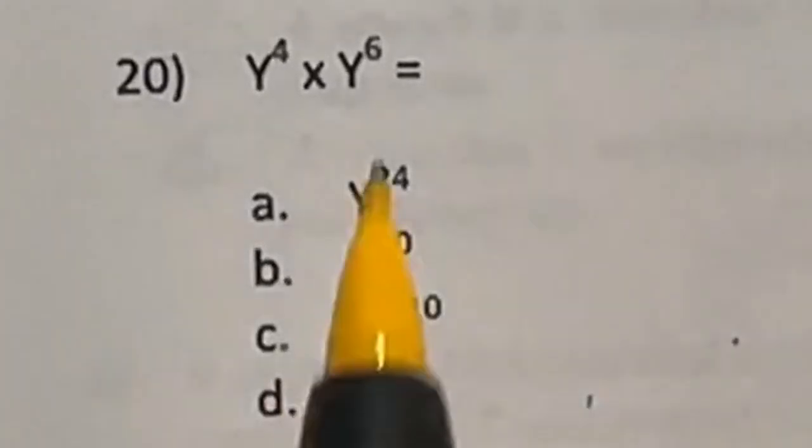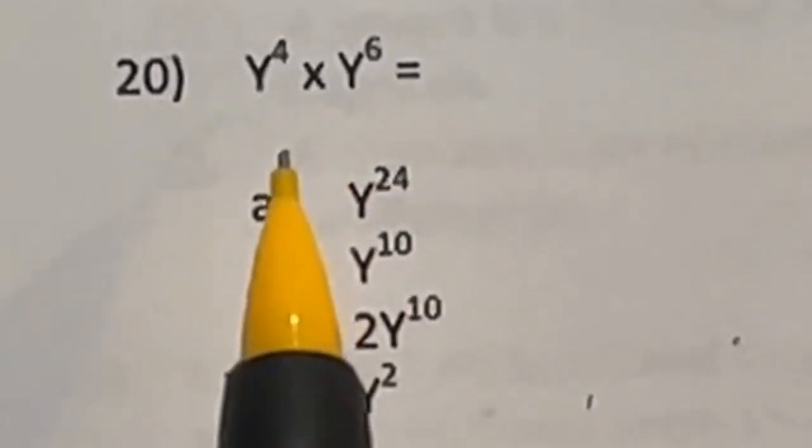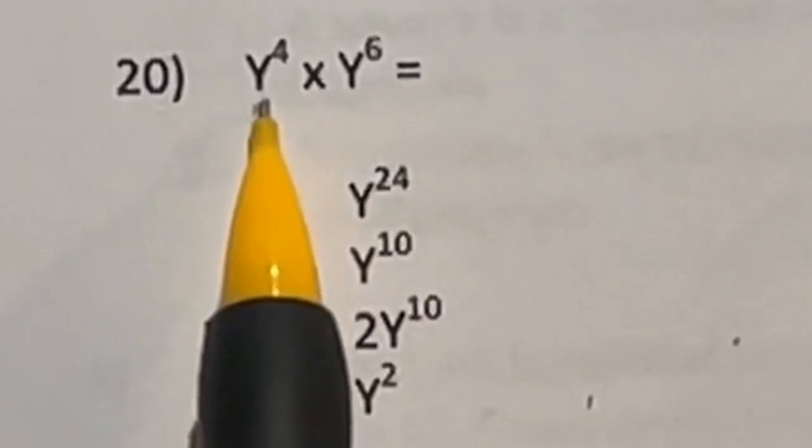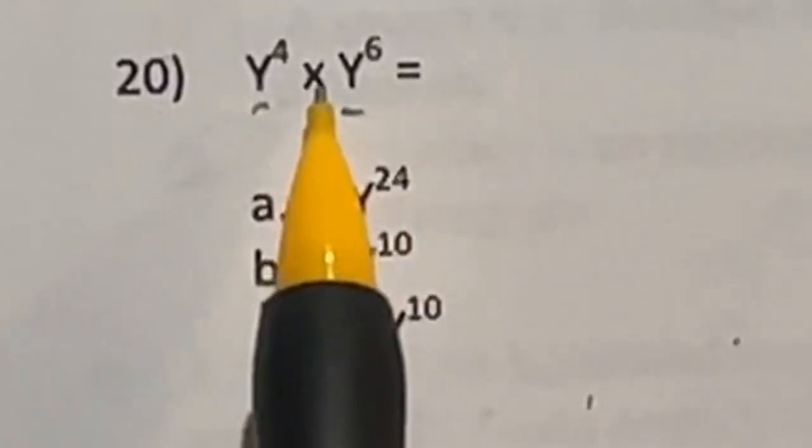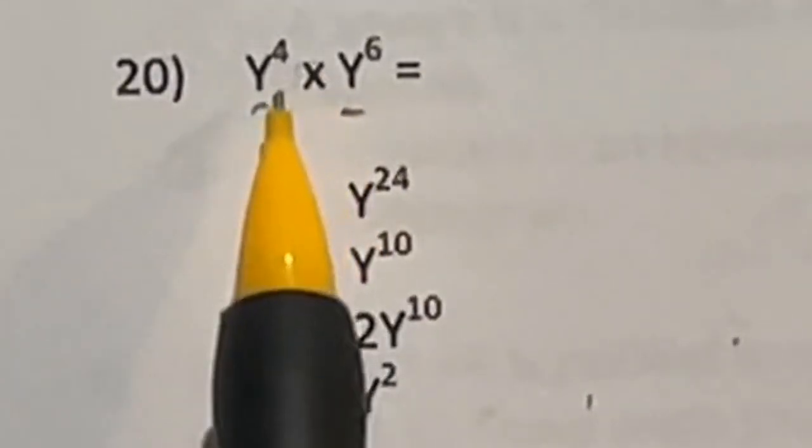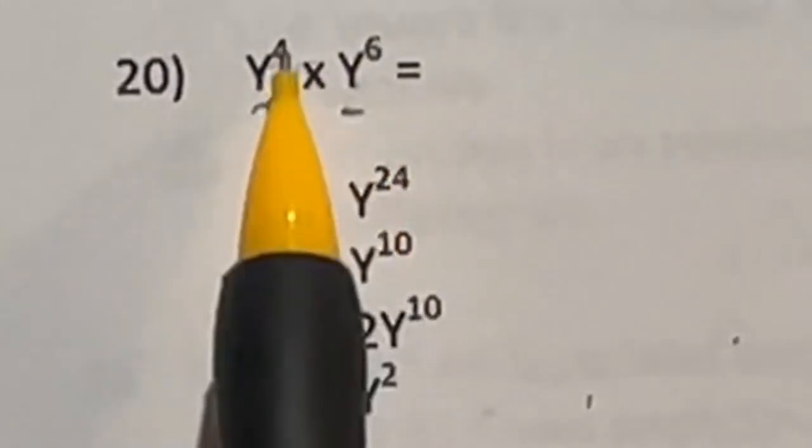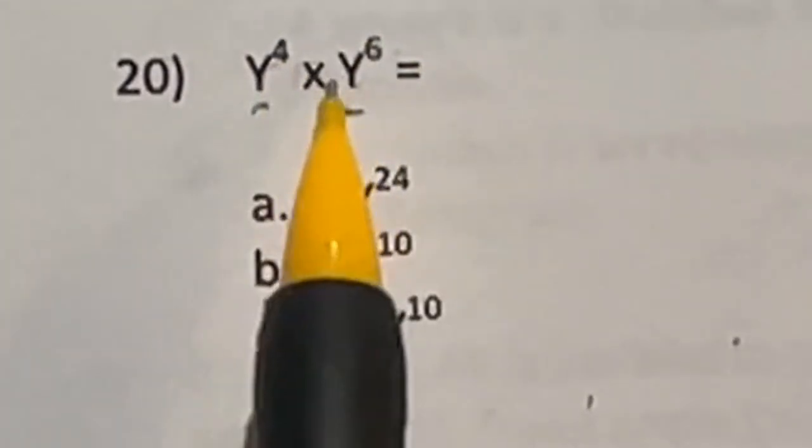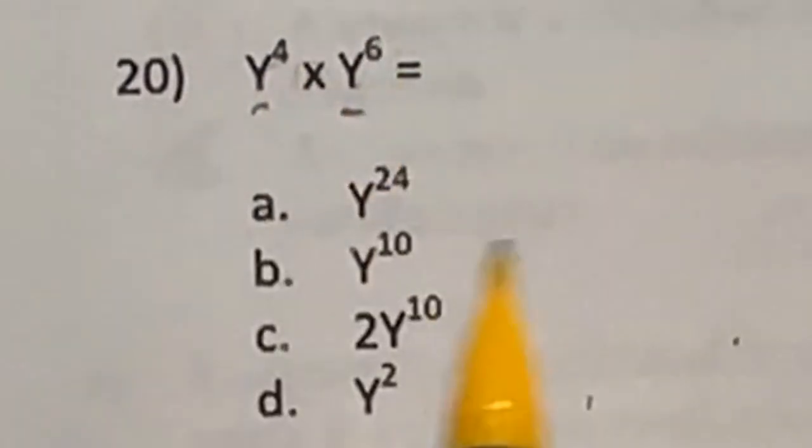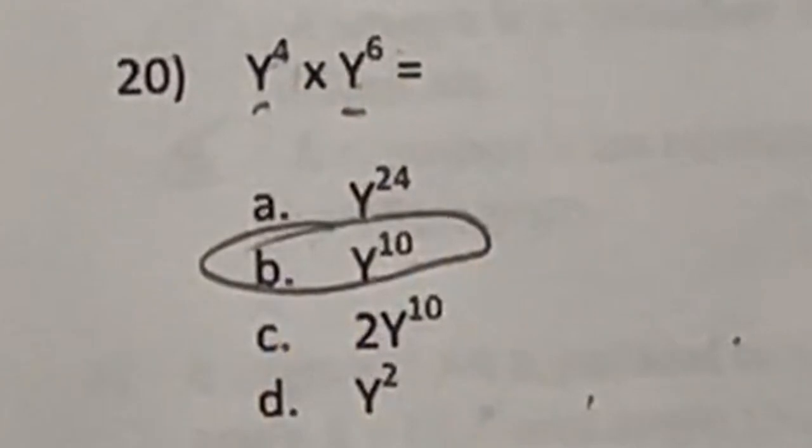I have done a lot of videos on exponent rules. Number 20 is just that. If you have the same base, in this case our base is Y, and you're multiplying them together, you're allowed to just go ahead and add the two exponents together. So in this case, Y and Y with an exponent of four and six, if you're multiplying, it would be four plus six, which is 10. So our final answer is B, Y to the 10th power.